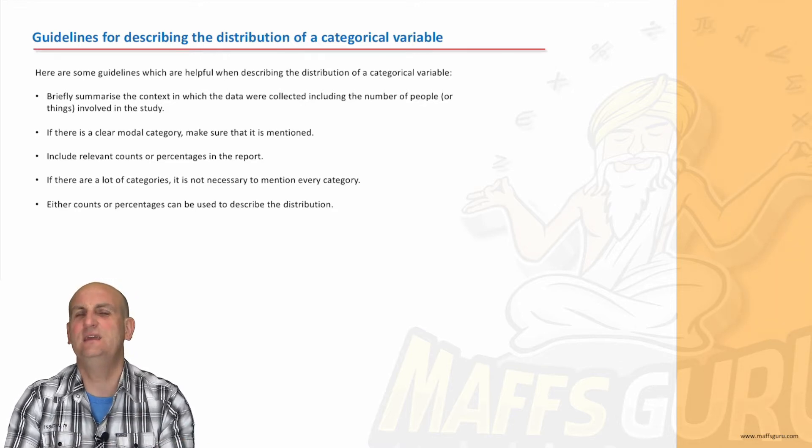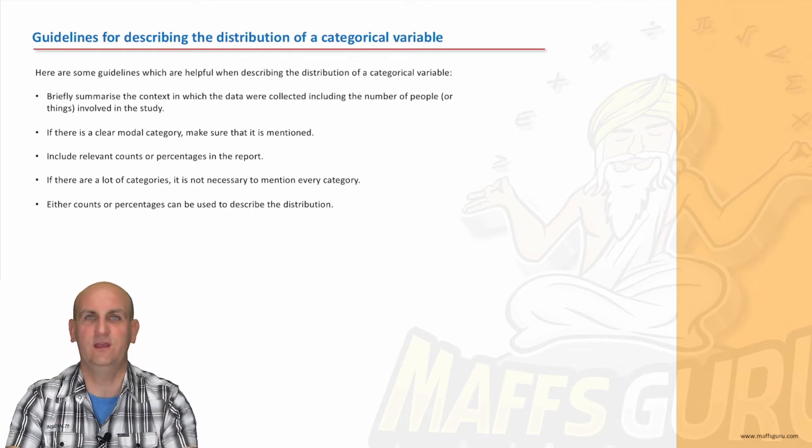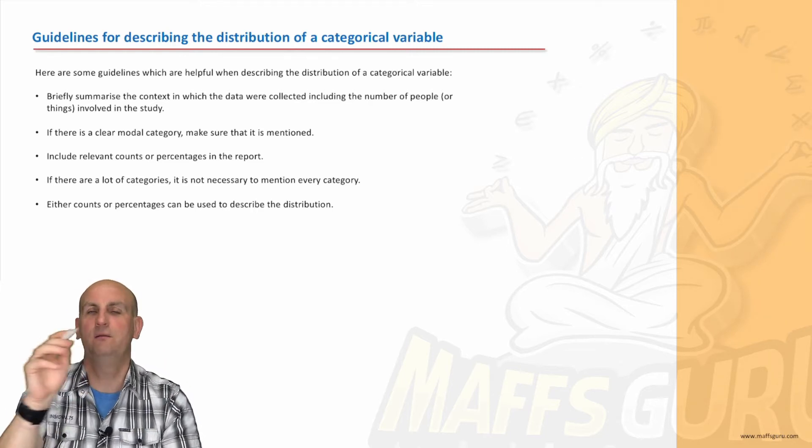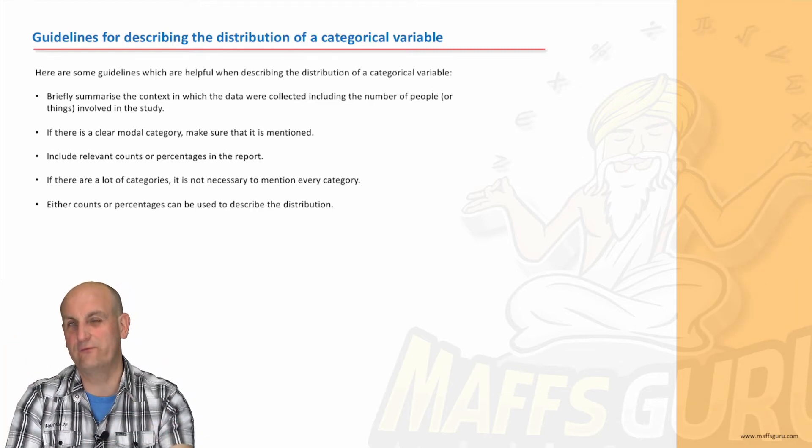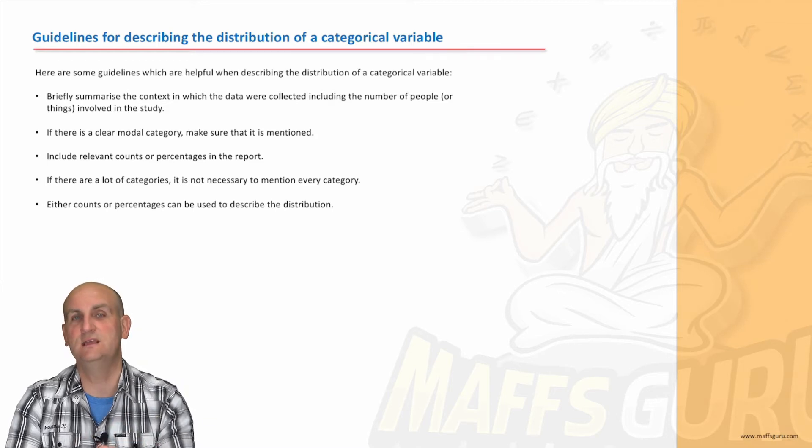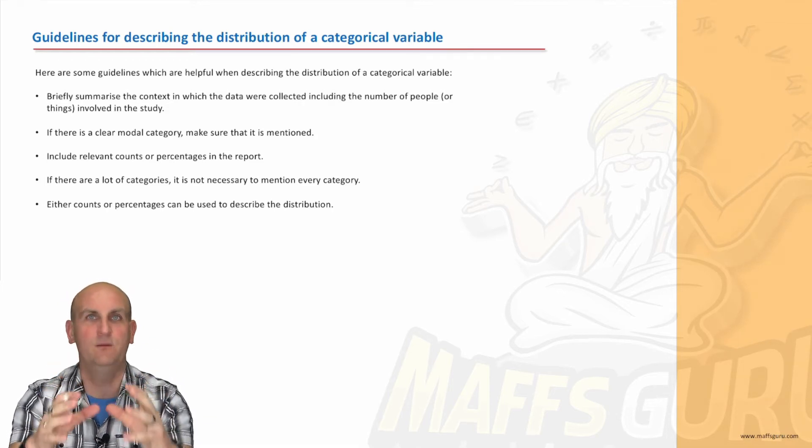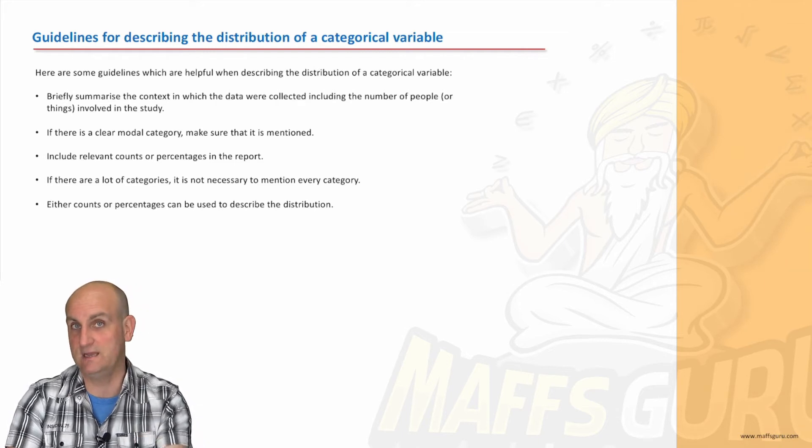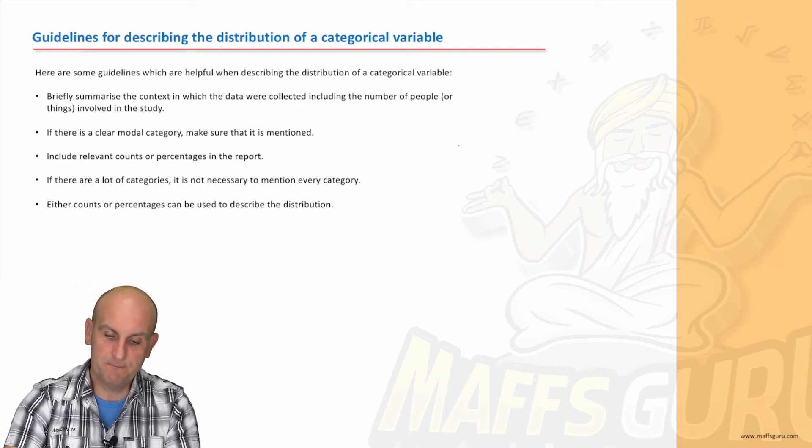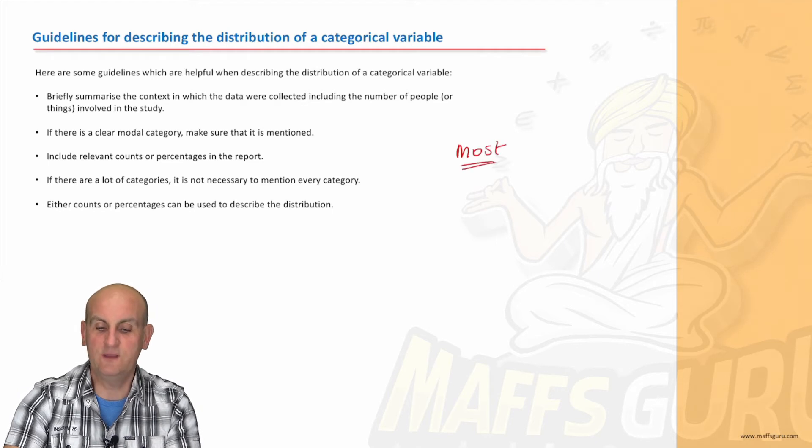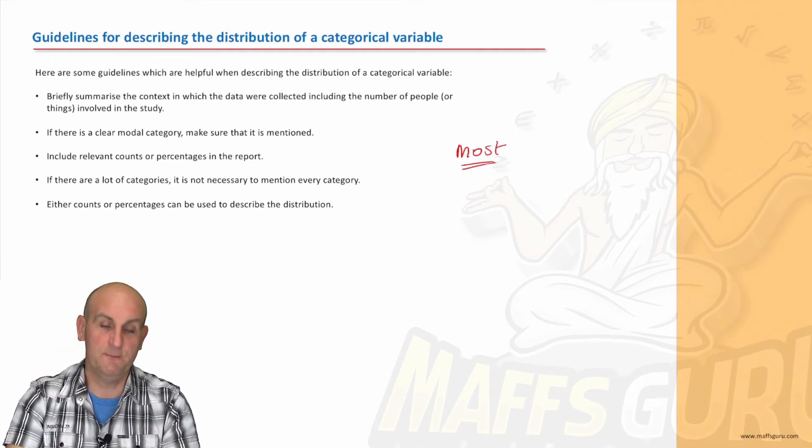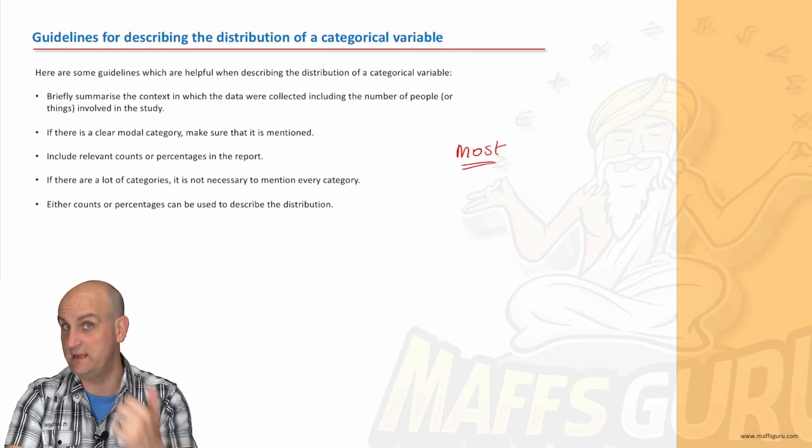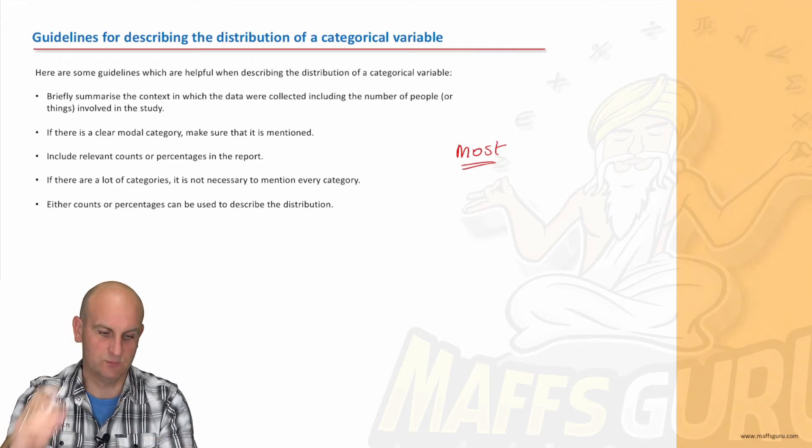One, briefly summarize the context in which the data was collected, including the number of people or things. Think of this like English, you know, when they give you the prompt or they give you the essay and you will say, oh, in this essay dealing with blah, blah, blah, you're almost reframing the question, right? So the first thing is look at the data, how many people are in it, the data they've collected and summarize it. If there is a clear modal category, modal means most, yes? So we're looking for the highest bar in the bar chart. Make sure it's mentioned, not just by name, but by height as well.